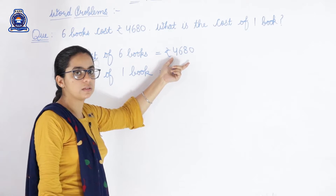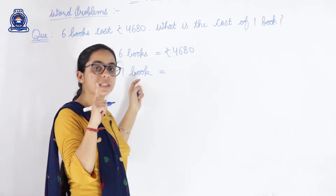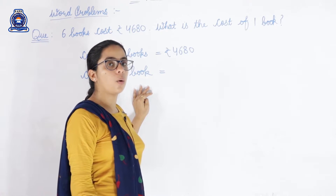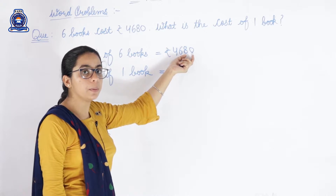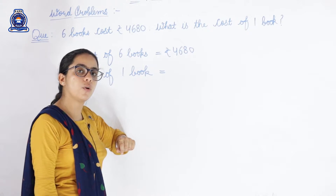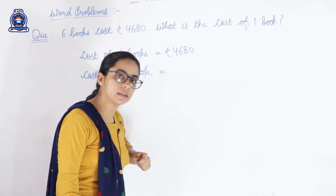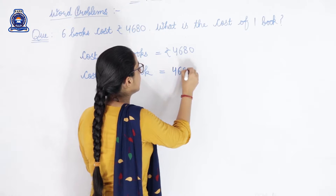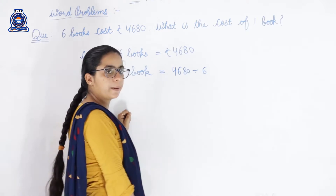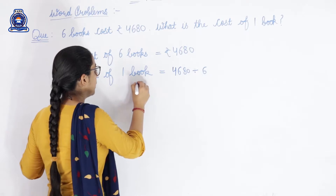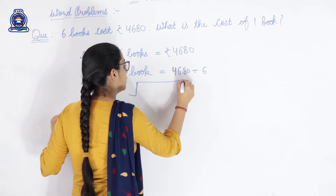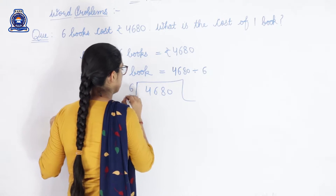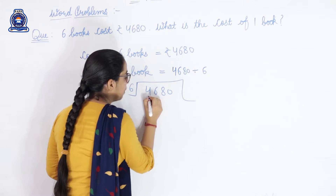...and you only want to purchase one book, what will you do? You will divide the amount told by the shopkeeper by the number of objects. So here also we will divide four thousand six hundred eighty by six. So now we perform: four thousand six hundred eighty divided by six.